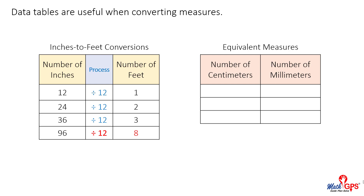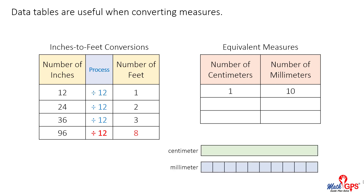Consider the new data table. The conversion of centimeters to millimeters will occur. What entry can be made in the first line of the table? We know that 1 centimeter is equal to 10 millimeters. We can calculate that 2 centimeters will equal 20 millimeters. 3 centimeters is equivalent to 30 millimeters.